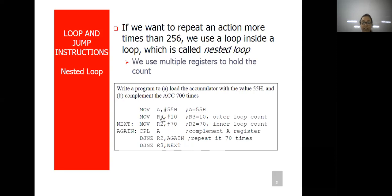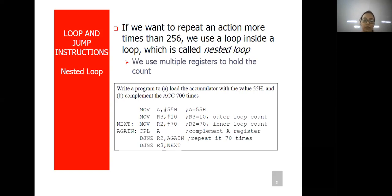Every time R3 is decremented, R2 register will be decremented from 70 to 0. Again when R3 loop is decremented from 10 to 9, 9 to 8, the inside loop will again run 70 times. So the inside loop runs 70 times each time until the outside loop becomes 0, giving a total of 70 into 10, 700 iterations. This concept is the nested loop. If you want to repeat any action more than 256 times, you use a loop inside a loop — the nested loop concept. Here multiple registers hold the count of data.